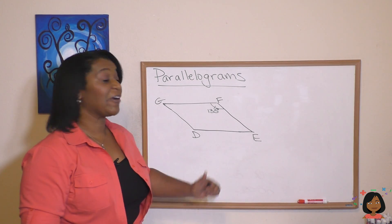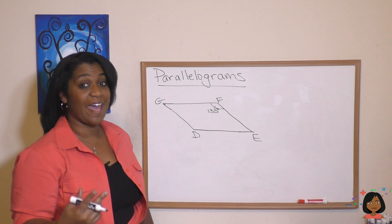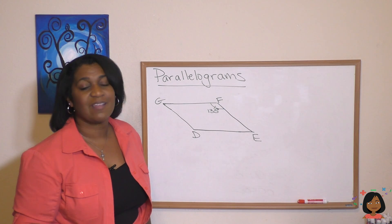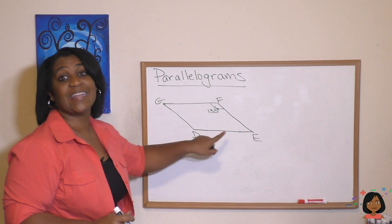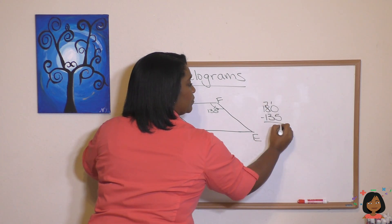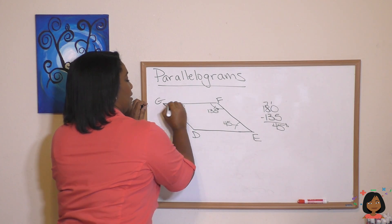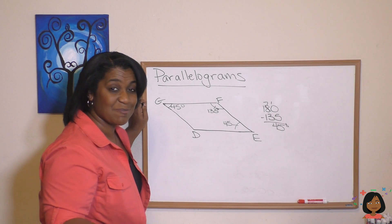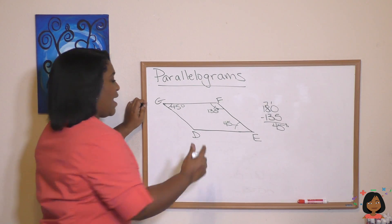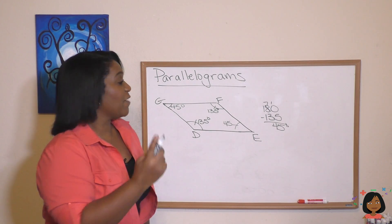Let's look at another example. Here I have a parallelogram, and I'm only giving you one angle — let's find all the others. Angle F is 135 degrees. The adjacent angles G and E will be supplementary: 180 minus 135 is 45 degrees, so angles E and G are both 45 degrees. The non-adjacent angle D is equal to angle F, so angle D is 135 degrees. That's a nice summary of the angles of a parallelogram.